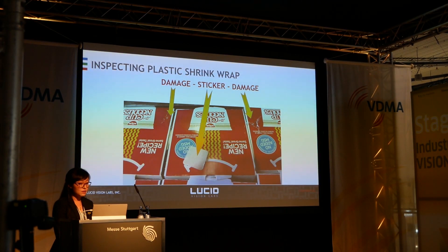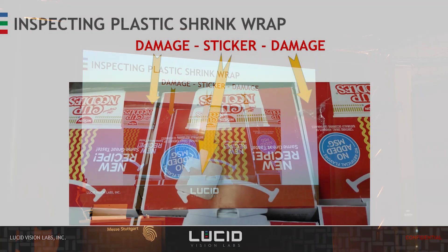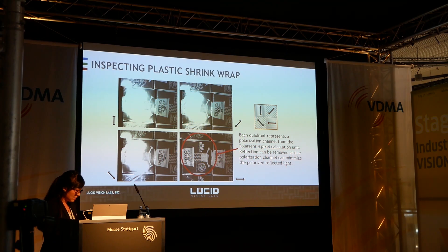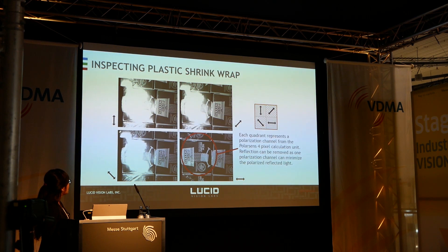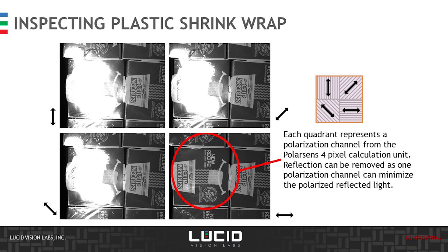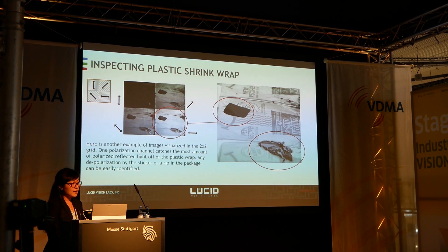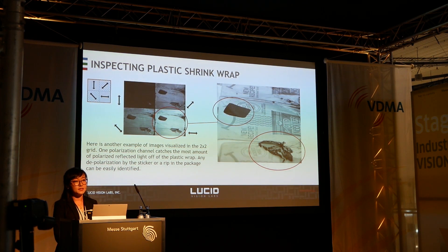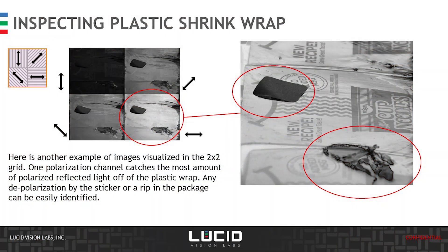In this application, we're looking at a shrink wrap package that has a rip in the plastic, as well as a foreign object — we use a sticker as an example. Taking an image with the polarization camera, each quadrant represents the image at a certain polarization angle. As you can see, three of the angles suffer strong reflection, whereas the horizontal angle can effectively filter out the glare from the plastic shrink wrap. If you tilt the light source and camera at an angle, in the horizontal direction you will see that polarized light reflected off the good surface is much stronger in intensity, whereas the presence of the sticker and the rip scatters the polarized light.